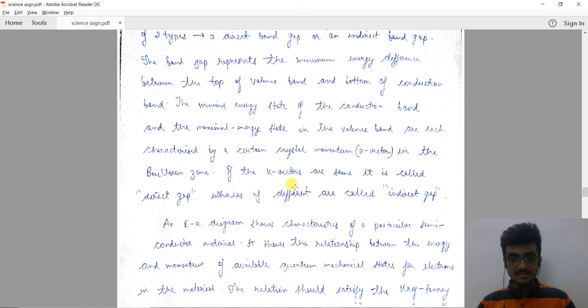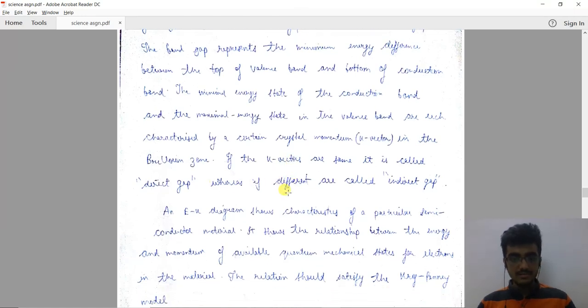If the K vectors are the same, it is called a direct gap, whereas if these are different, then it is called an indirect gap.